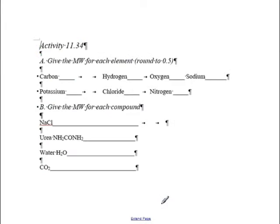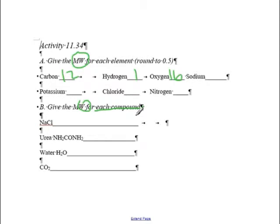Everybody get your worksheet? Let's do a few together so you know how to do it. First, you need to find the molecular weight. How do we find the molecular weight? We look at the periodic table. Some of you should remember some of these: hydrogen is one, carbon is 12, oxygen is 16. You should be able to figure out the rest—just look at the periodic table. To find the molecular weight for a whole compound, you just count up the number of atoms and if you know the molecular weight for each atom, you should be able to figure it all out.